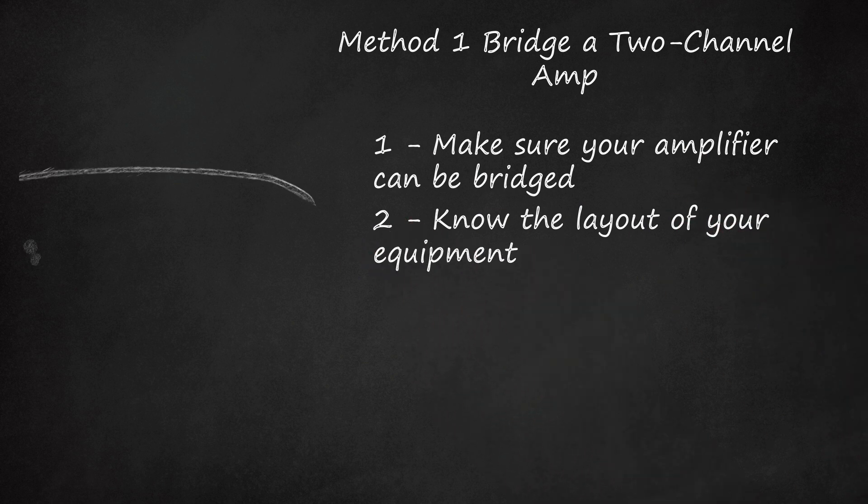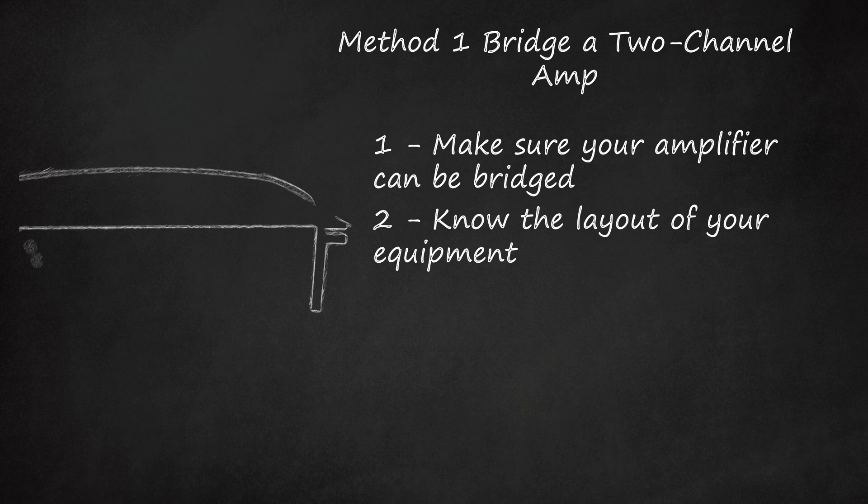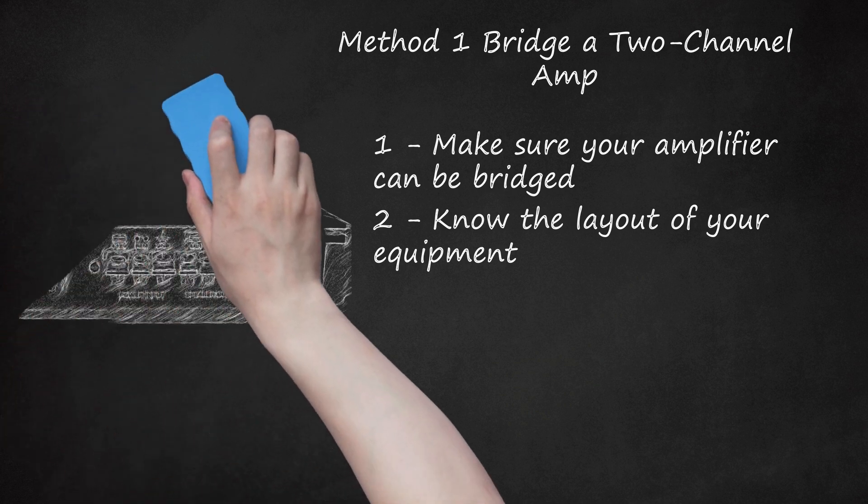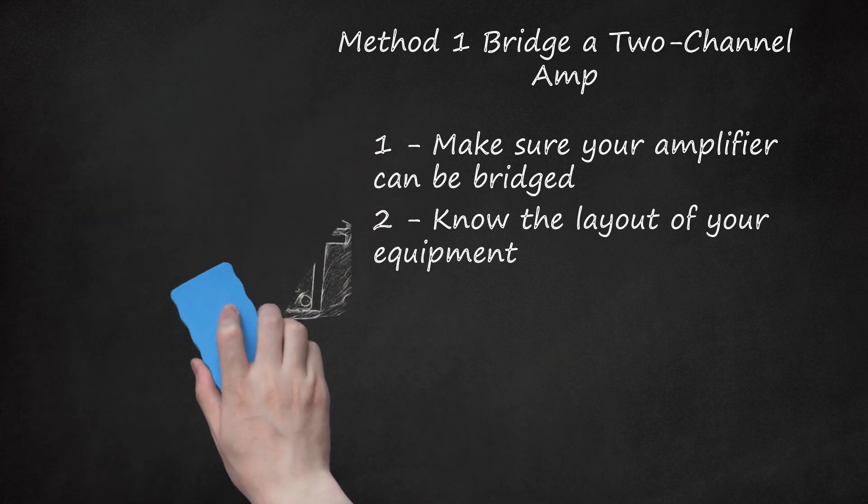Step 2: On your 2-channel amp, you should see 4 terminals: a positive and a negative for channel 1, and a positive and a negative for channel 2. Each terminal will be labeled as follows: Channel 1 - A positive, B negative; Channel 2 - C positive, D negative.